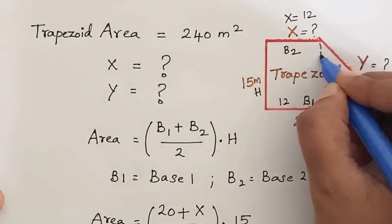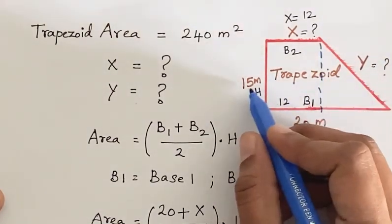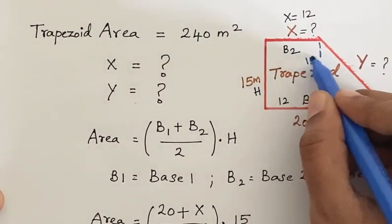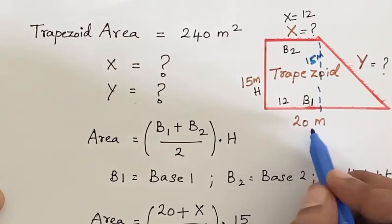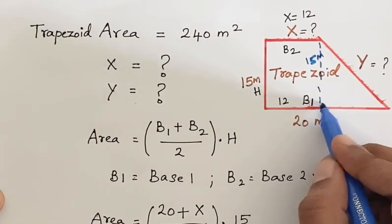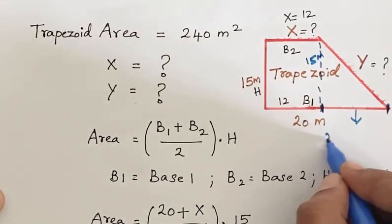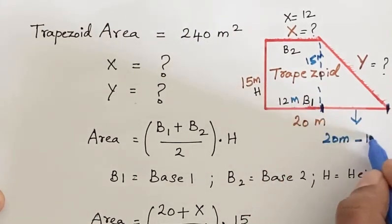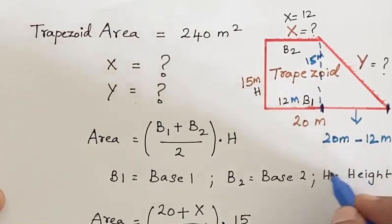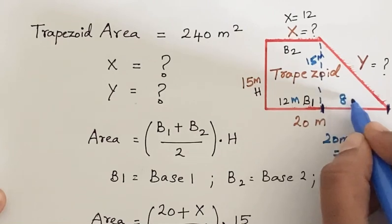Now, if you draw a straight vertical line over here, it forms a rectangle where its opposite sides are equal. So the length of this line is 50 meters. Now let us find the length of this base line. So it is nothing but the overall length, that is 20 meters, minus the x value, that is 12 meters. So if we subtract this, we get 8 meters. So the length of this base line is 8 meters.